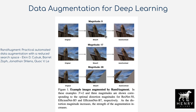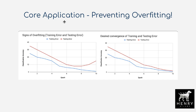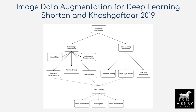The idea of data augmentation is to use semantic invariances to create a bigger dataset, since deep learning is big-data technology. This primarily prevents overfitting — without augmentation, training error keeps decreasing while test error spikes. With augmentation, both training and test error decrease together.